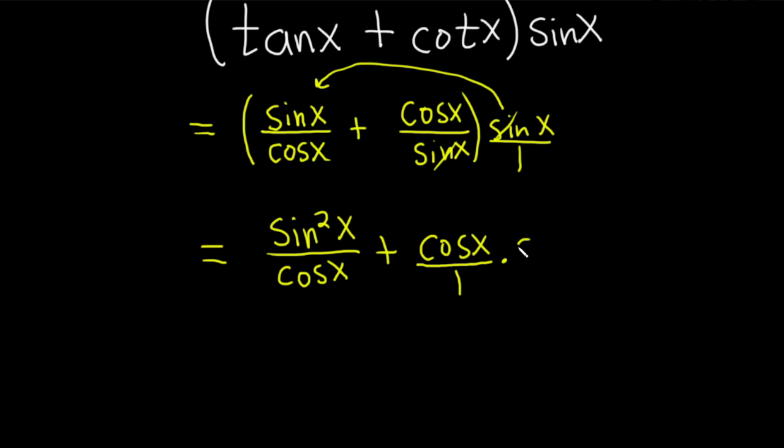So to do that, we're basically going to multiply by cosine x over cosine x. We're really just multiplying by 1 in a clever way, right? Because this is just 1 and it cancels.